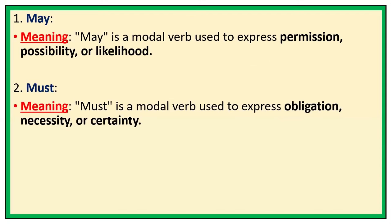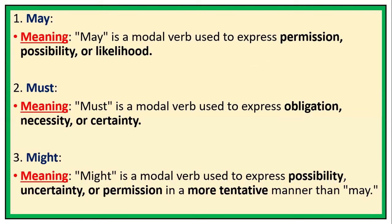Two: must. Meaning: must is a modal verb used to express obligation, necessity, or certainty. Three: might. Meaning: might is a modal verb used to express possibility, uncertainty, or permission in a more tentative manner than may.